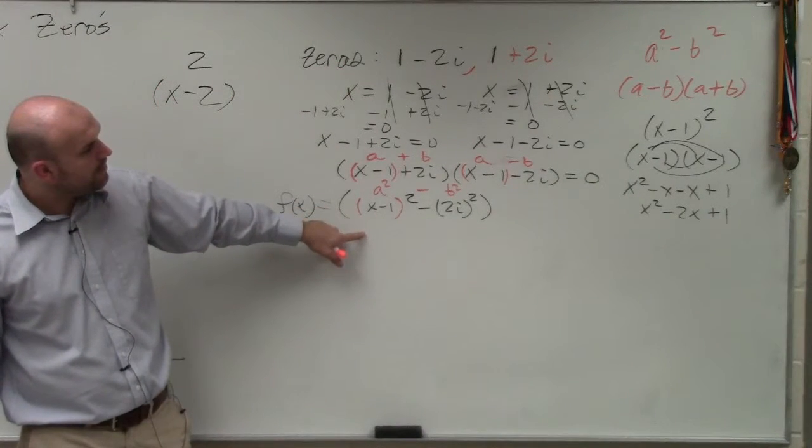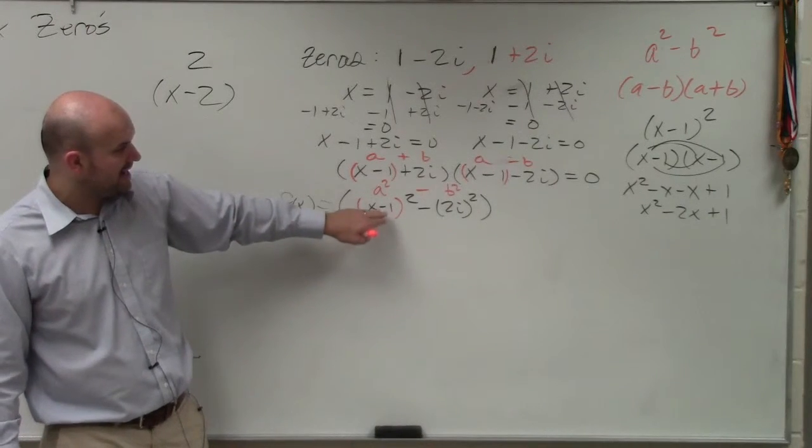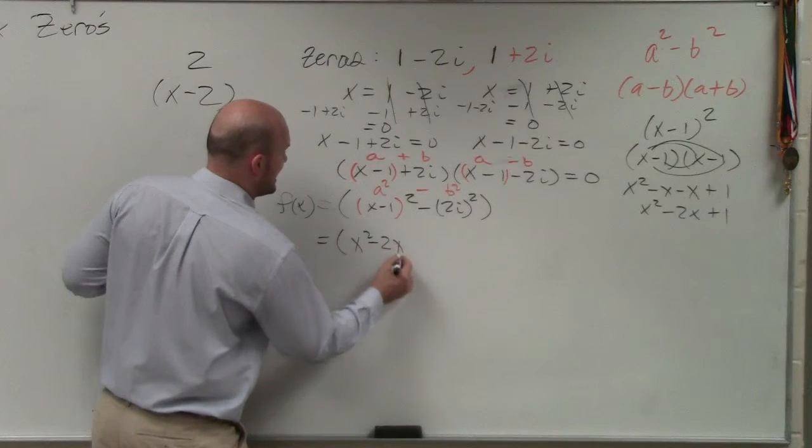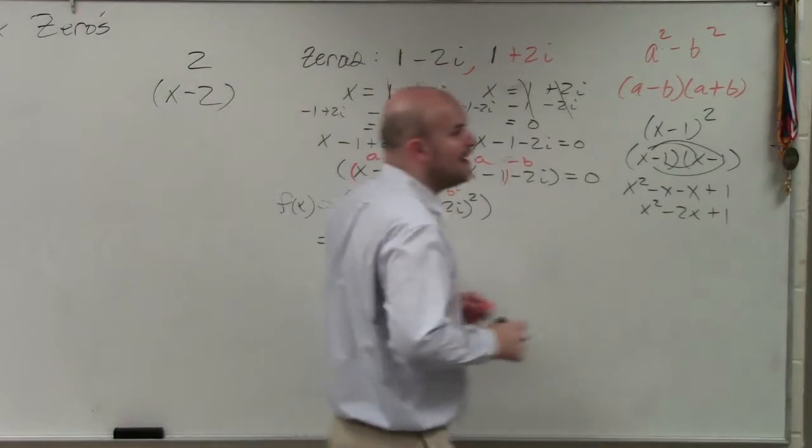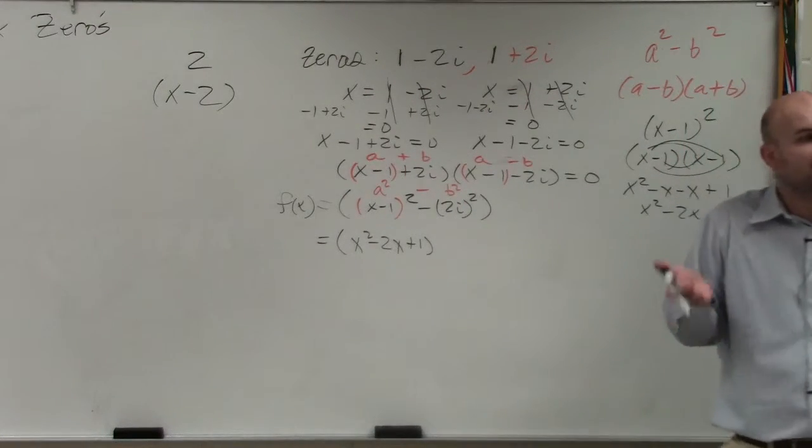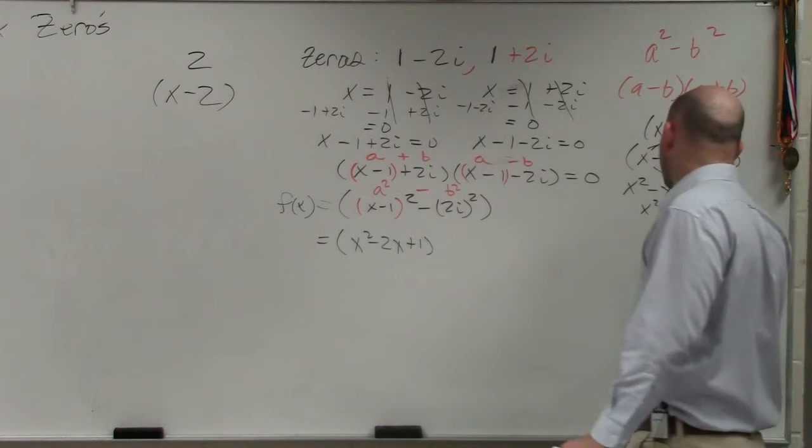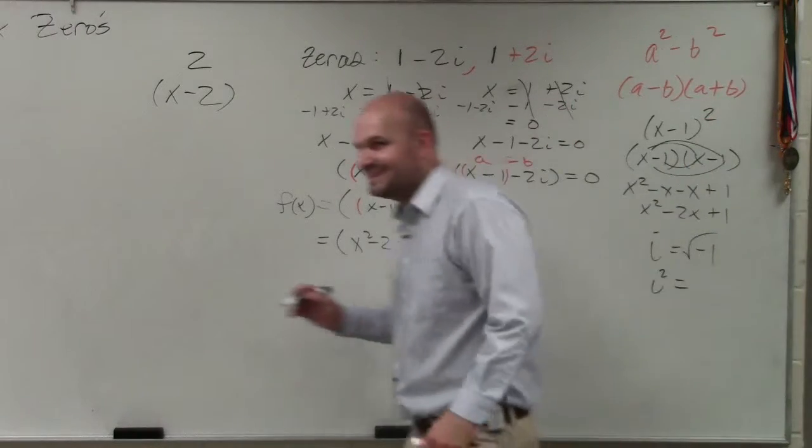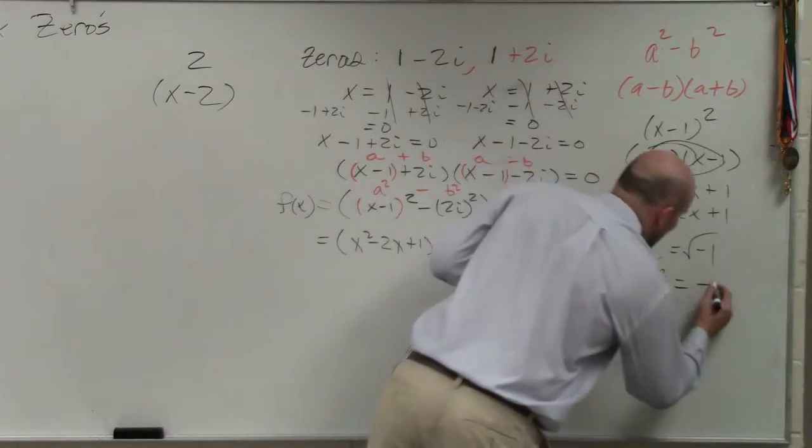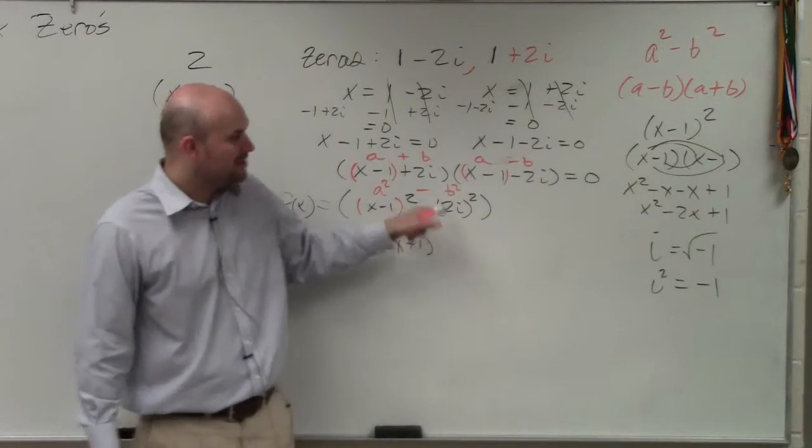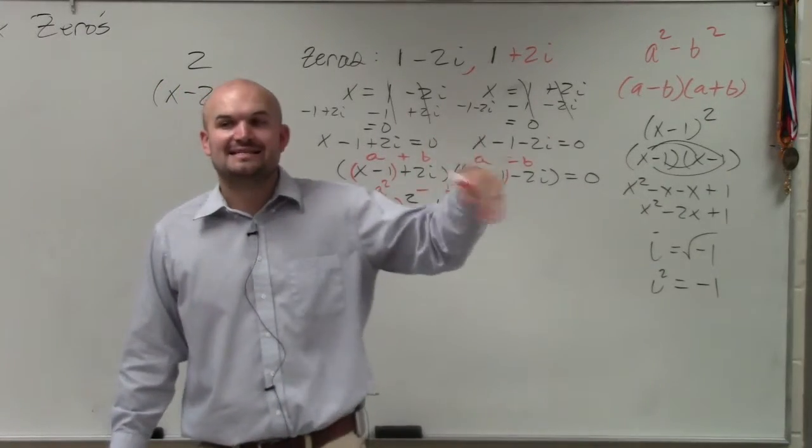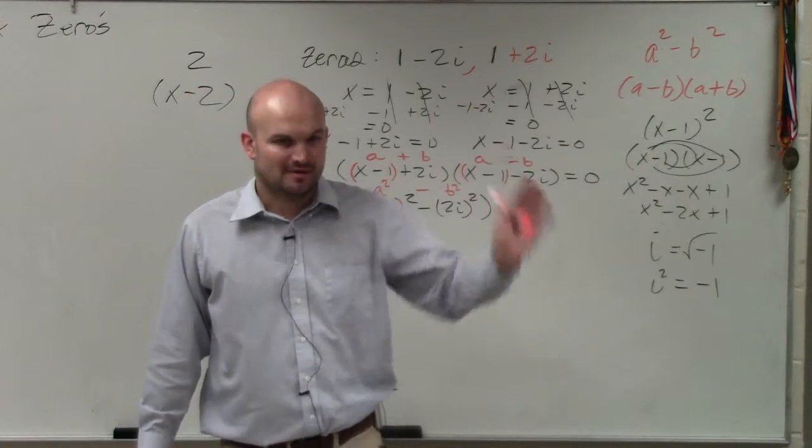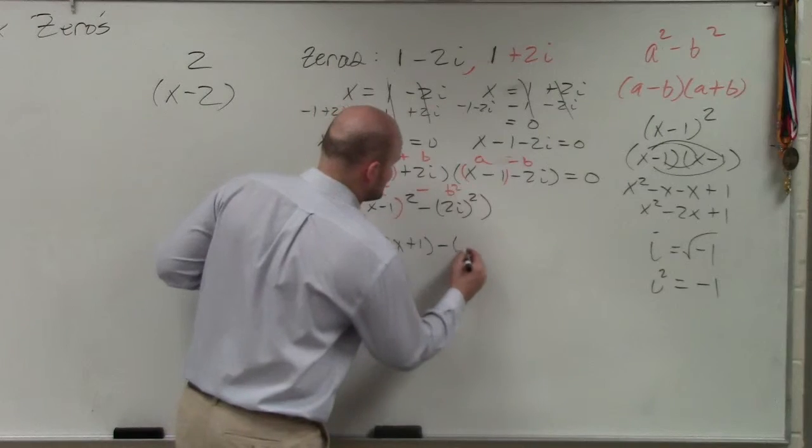So now, let's multiply x minus 1 out. x minus 1 times x minus 1 is going to equal x squared minus 2x plus 1. And then 2i squared, 2i times 2i is going to be 4i squared. Now, hopefully you guys remember that also, if i equals the square root of negative 1, and if we square both sides, then i squared is negative 1. 2i squared is 2i times 2i, 2 times 2 is 4, i times i is i squared. i squared is negative 1. Negative 1 times 4 is negative 4.